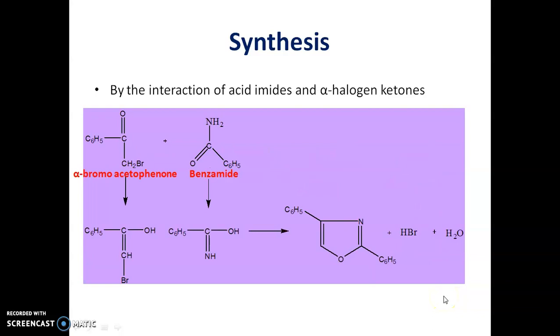The second method is by interaction of acid imides and alpha-halogen ketones. We start with alpha-bromoacetophenone and react it with benzamide. We will get 2,5-disubstituted Oxazole as the end product.